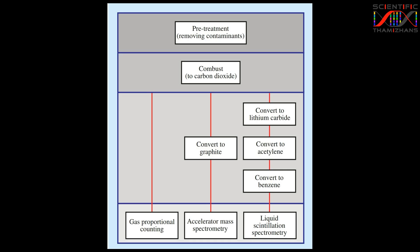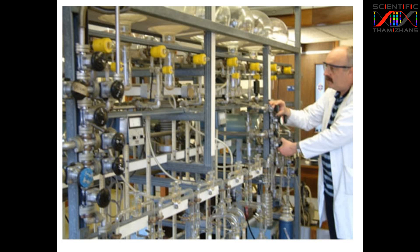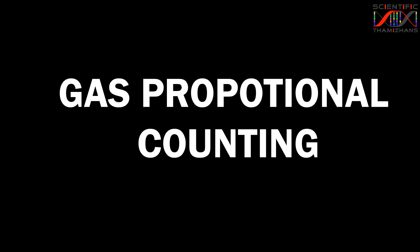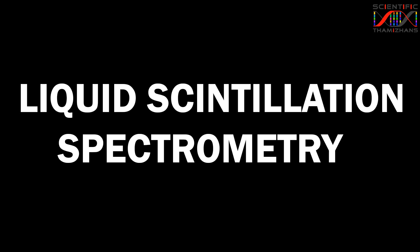We can do this in radiocarbon dating through a very complicated procedure in a scientific lab. There are three techniques we will discuss. The first technique is gas proportional counting, based on carbon-14 decay. The second is liquid scintillation spectrometry.